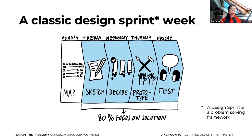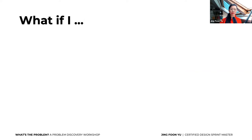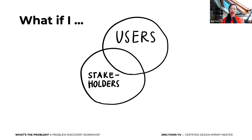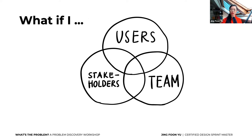A design sprint is a problem-solving framework to solve big challenges and test new ideas in just five days. But what if I told you that you can make sense of users' needs, perceptions, and expectations, identify and capture stakeholders' perspectives, and align teams towards a common goal — all before a sprint? What if we could validate problems like we validate solutions before building them, and always focus on a problem worth solving?